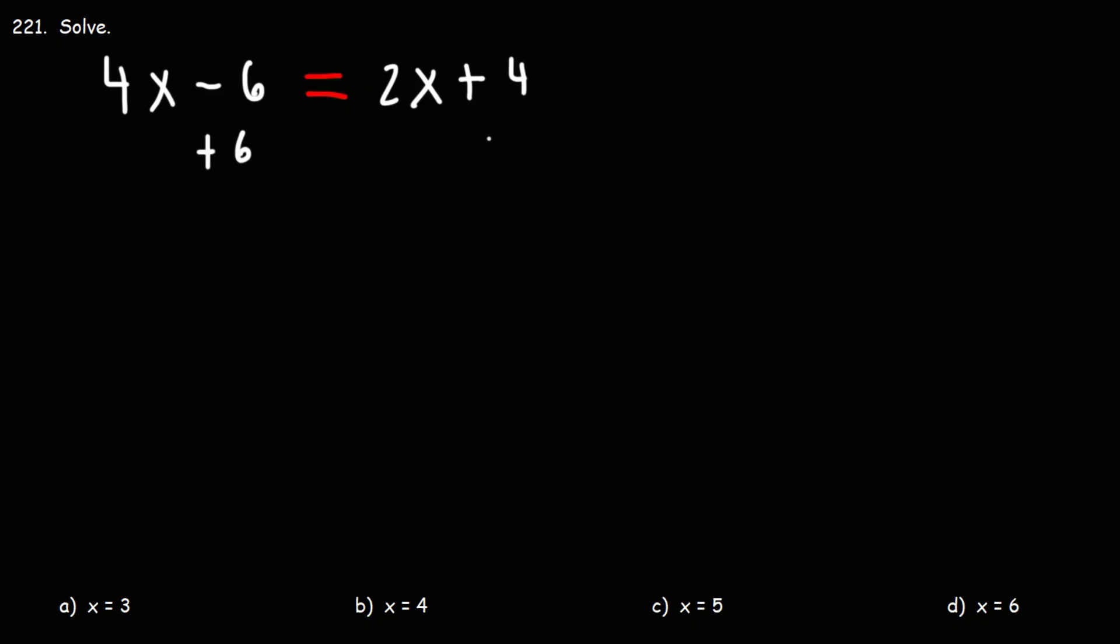So one thing we could do is add 6 to both sides. At the same time, we could subtract both sides by 2x. Because we have x variables on both sides of the equation, we want to cancel one of them so that we only have it on one side of the equation.